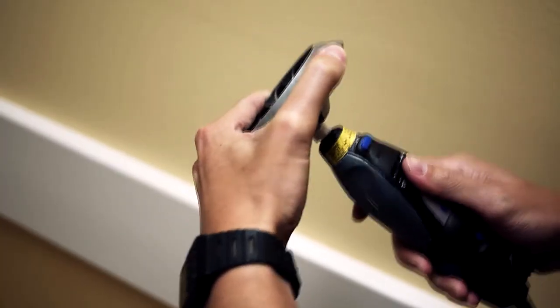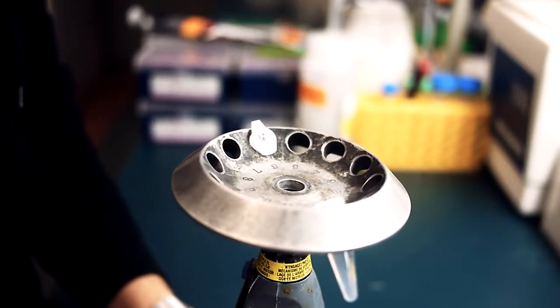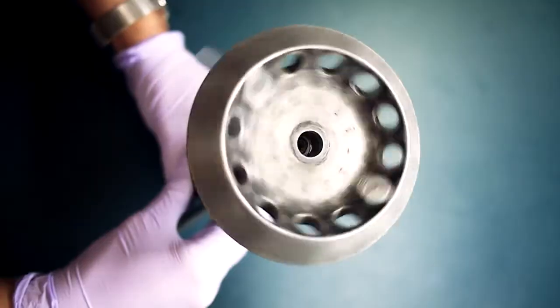We first make a centrifuge by connecting our tube holder to a normal drill. We then put the urine sample in the centrifuge, and the rotational force pulls the fungus to the bottom of the tube.